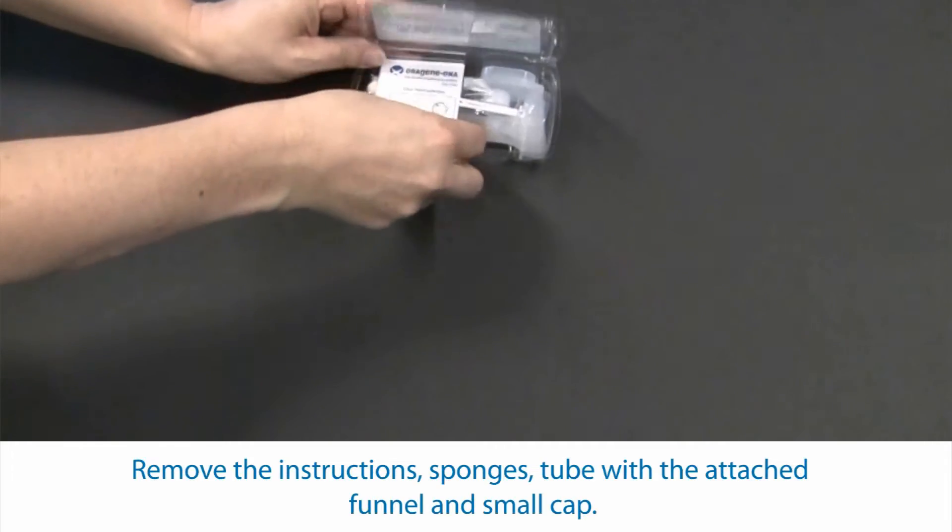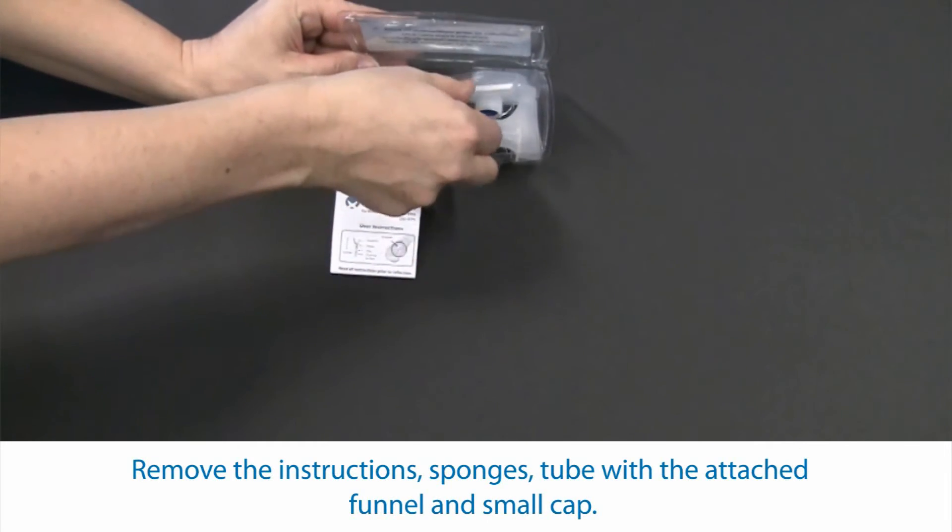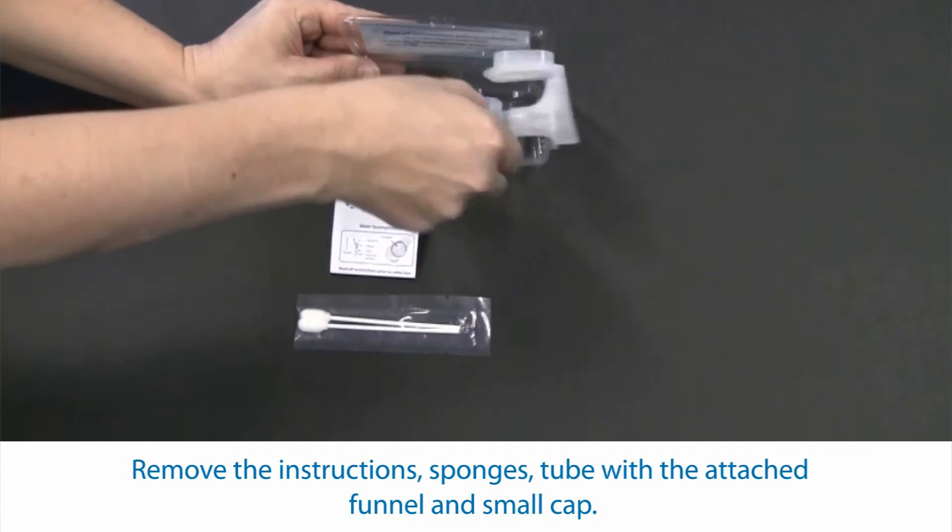Included inside the kit are user instructions, two sponges, a collection tube with attached funnel, and a small cap.